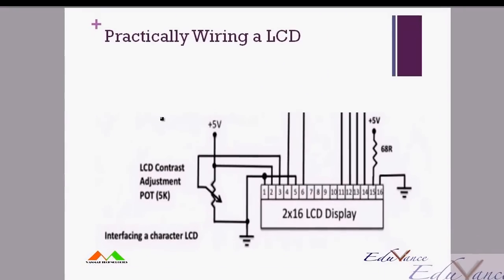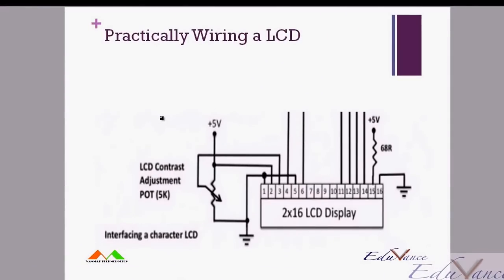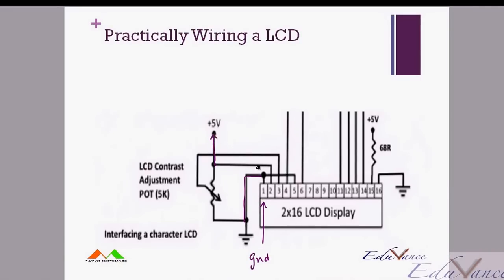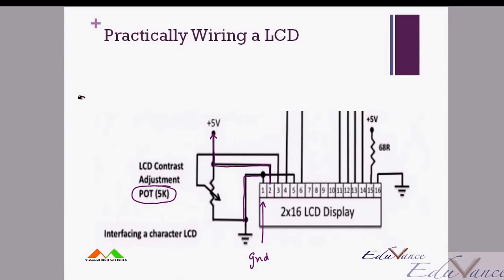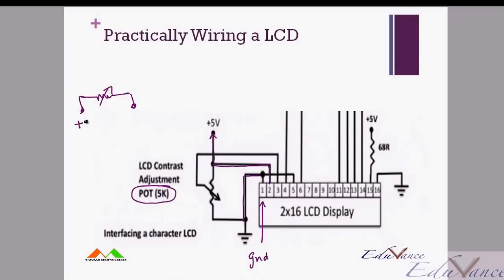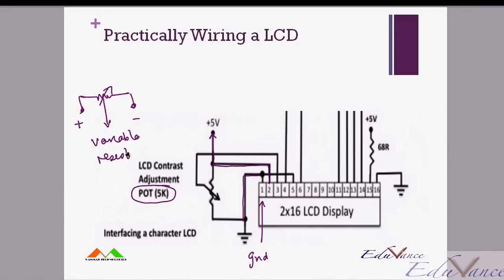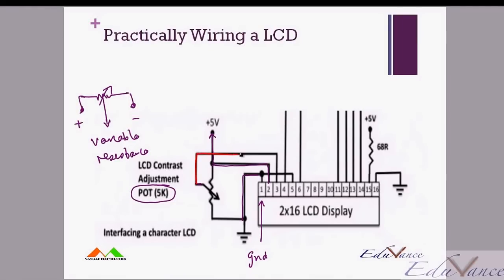Pin number 1 is connected to ground, pin number 2 to power supply. Pin number 3 is connected to the central terminal of a potentiometer. A potentiometer is a variable resistor where you connect the two extreme terminals to plus and minus, and the center terminal to the point where you want variable resistance. So the center terminal of the potentiometer connects to pin number 3, which is the contrast pin.